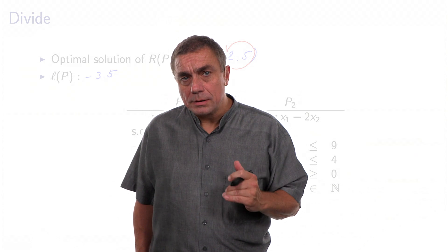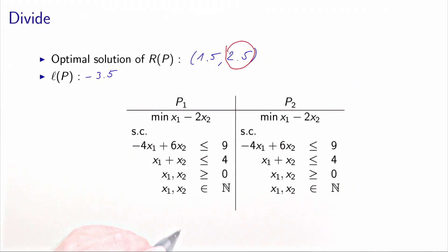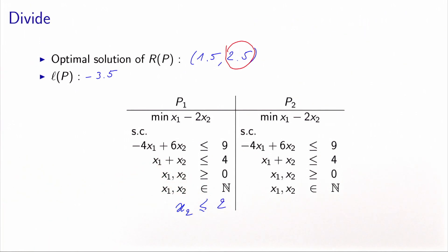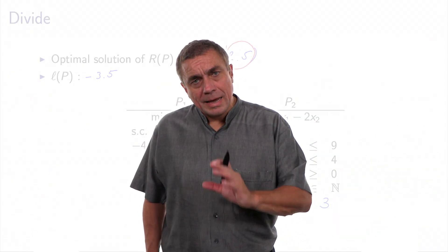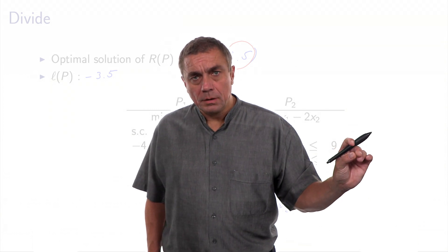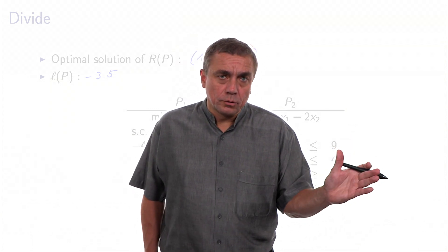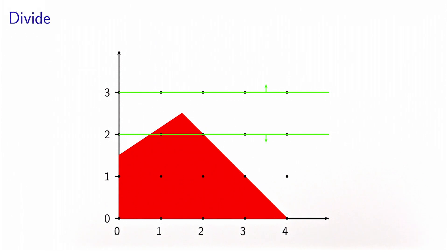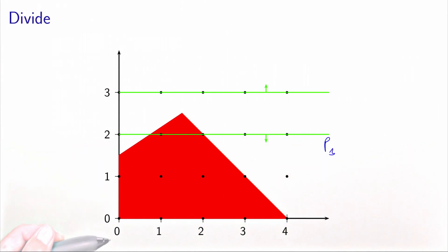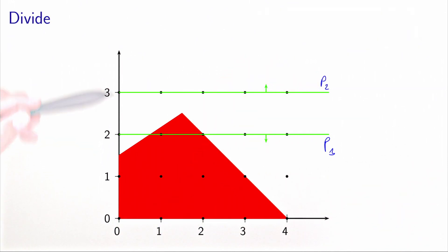These are the two types of constraints we will impose. For problem P1, we will impose that x2 is less or equal to 2. And for problem P2, we will impose that x2 is greater or equal to 3. This is a partition of the original feasible set because any feasible solution in the original problem has a value of x2 which is either greater or equal to 3, or less or equal to 2. From a graphical point of view, P1 takes x2 below the constraint, while P2 imposes x2 to be above it.